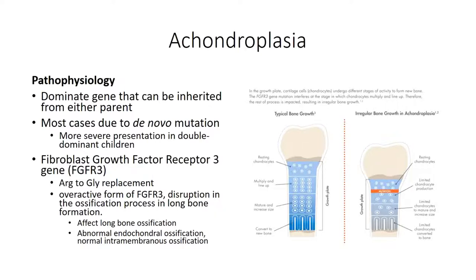Achondroplasia presents in an autosomal dominant inheritance pattern. Only about a fifth of cases are inherited from an affected parent, with the remaining cases resulting from de novo mutation. The mutation involves the FGFR3 gene, which codes for a fibroblast growth factor receptor. The most common form of the mutation appears to be an alanine to lysine amino acid substitution that results in an overactive form of the receptor. Chronic FGF receptor activity has a negative effect on chondroblast proliferation within the epiphyseal growth plate, which is of critical importance in Zone 2, the zone of proliferation, ensuring the continued growth of the epiphyseal plate towards the epiphysis.